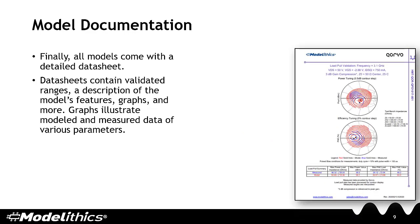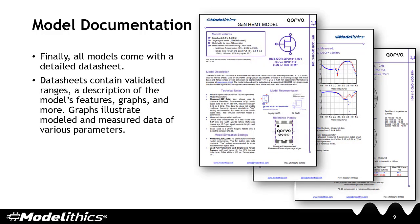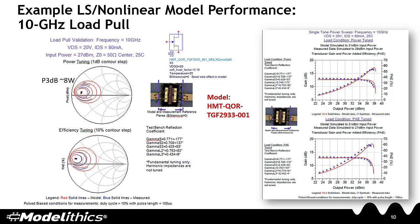All models come with a detailed data sheet. Data sheets contain information such as validated ranges, a description of the model's features, graphs, and more. Graphs illustrate modeled and measured data of various parameters. As an example, here you see nonlinear performance of one particular model — a 10 GHz load-pull analysis is shown, with gain and power-added efficiency plots shown on the right.